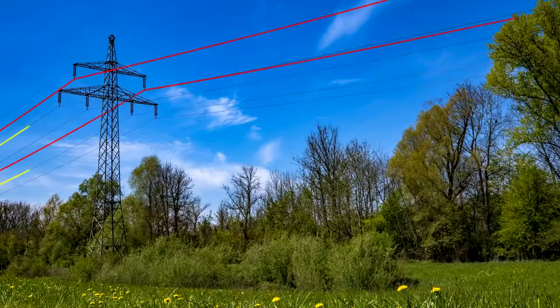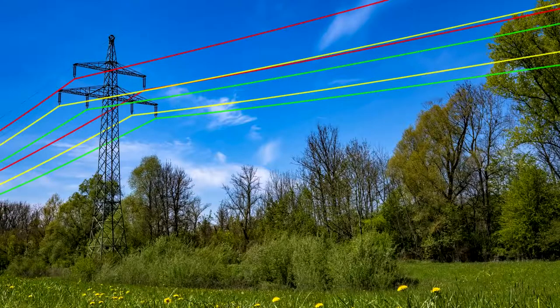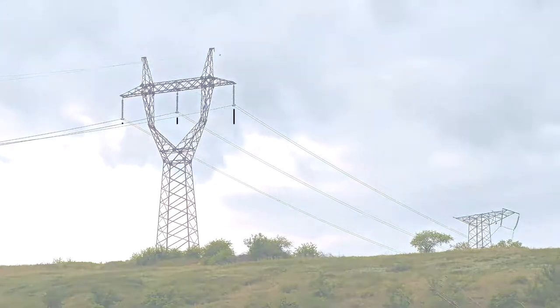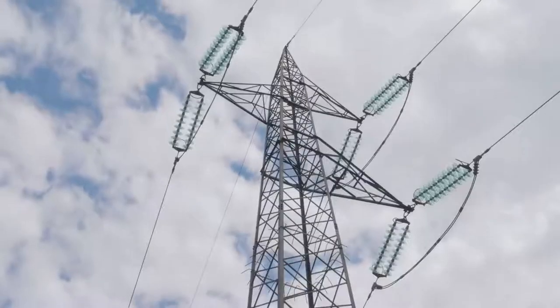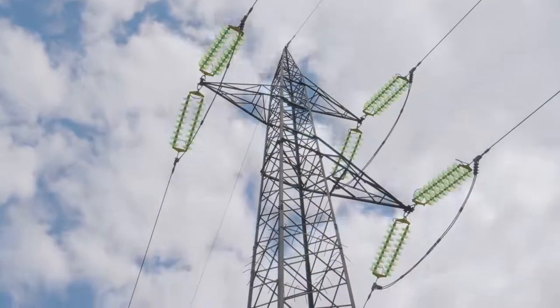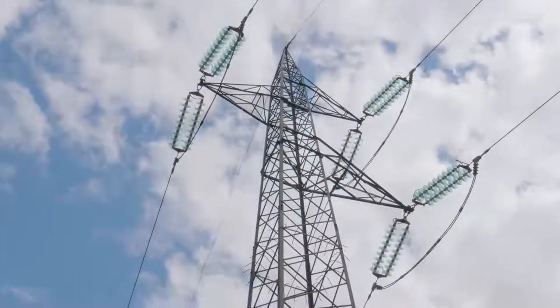Bulk electricity is transmitted in three phases, which is why you'll see most transmission conductors in groups of three. Each phase is spaced far enough apart from the other two to avoid arcing between the phases.